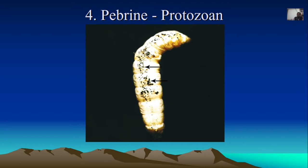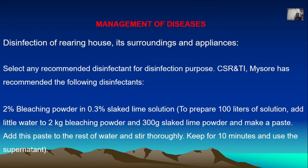To control or manage the diseases, use 2% bleaching powder in 0.3% slaked lime solution. To prepare 100 liters of solution: add water to 2 kg bleaching powder and 300 grams slaked lime powder, make a paste, add to the rest of the water, stir thoroughly, keep for 10 minutes, and use the supernatant. Close the rearing house and its appliances after use. The next day, clean the rearing house thoroughly before starting the next rearing cycle — otherwise remnants will disturb the next cycle.